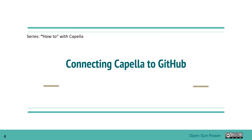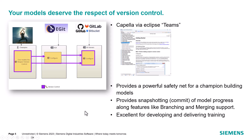Welcome to the how-to series with Capella. Today we will show you how to connect GitHub to load up a model. First of all, your model deserves respect for version control. We're going to walk through a very simple use case with you being the champion. We're going to use eGit, which is integrated already within Capella to do this, and we're going to connect to GitHub.